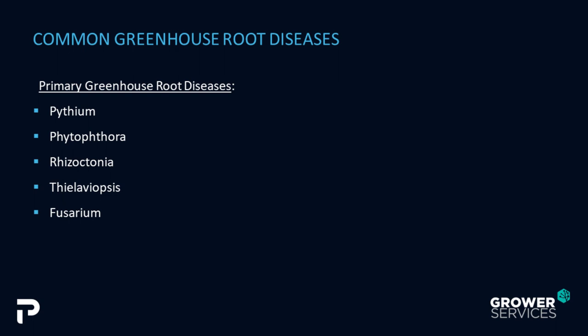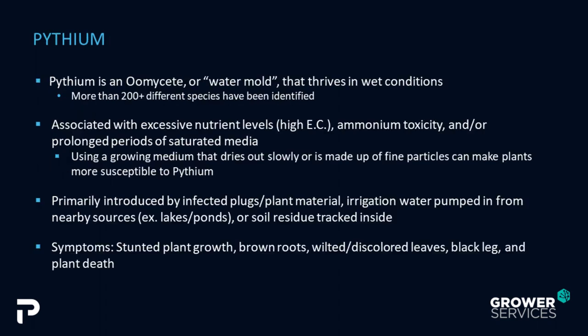The five most common greenhouse root diseases are Pythium, Phytophthora, Rhizoctonia, Thielaviopsis, and Fusarium. Pythium is an oomycete or water mold that thrives in wet conditions – when you over-fertilize or over-water your plants, this root disease loves those conditions. There have been shown to be over 200 different species of Pythium identified; not all are necessarily harmful to plants, but many have already been shown to be toxic to plants.